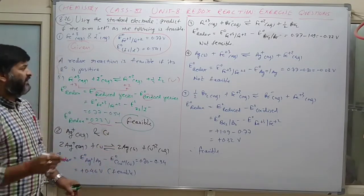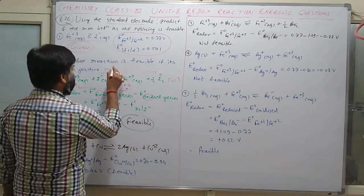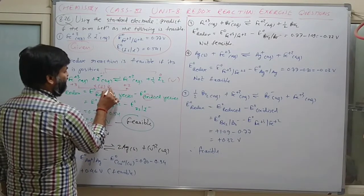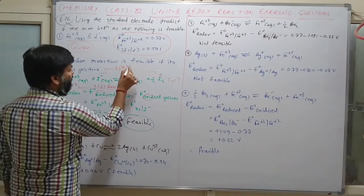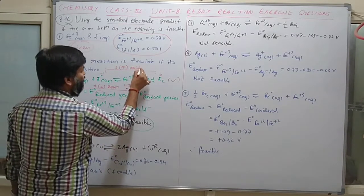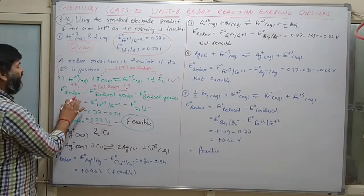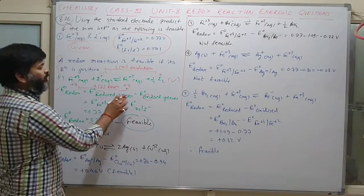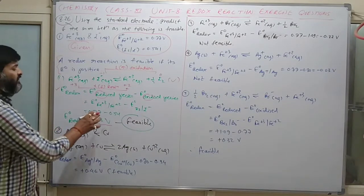For Fe³⁺: oxidation state goes from 3 to 2, so one number decreases — that is reduction. For I⁻: oxidation state goes from -1 to 0, so one number increases — that is oxidation. Whenever calculating E° redox, use reduction minus oxidation. Put in the values accordingly.